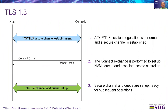How does TLS 1.3 secure channel establishment operate with NVMe over Fabrics? Rather than just a TCP session, a TLS session is established over TCP. Then comes the connect command to set up the NVMe queue and associate the host with the controller. All traffic once the TLS secure channel is established — including the connect command and any subsequent traffic — is encrypted and cryptographically protected. This is how TLS 1.3 ensures a secure channel in NVMe over Fabrics.